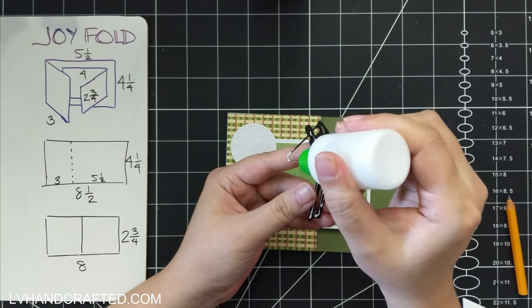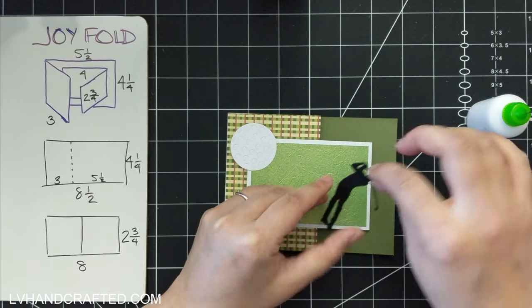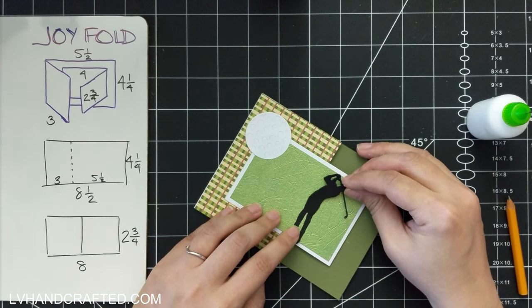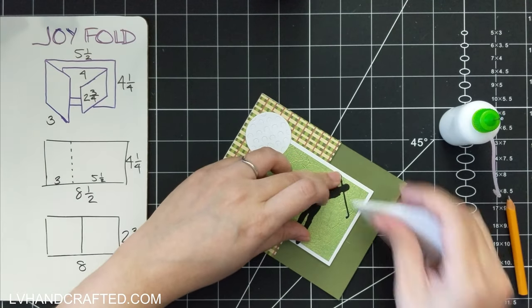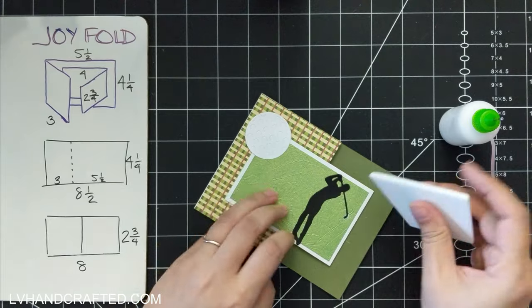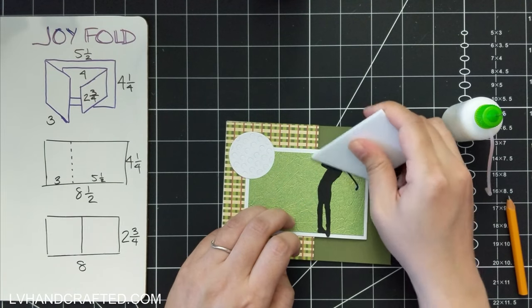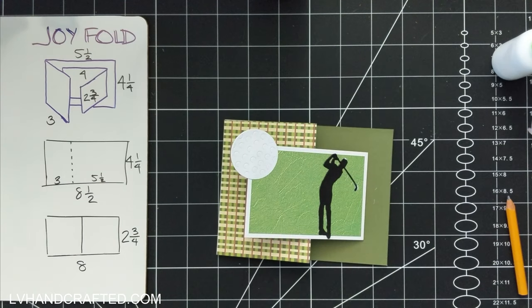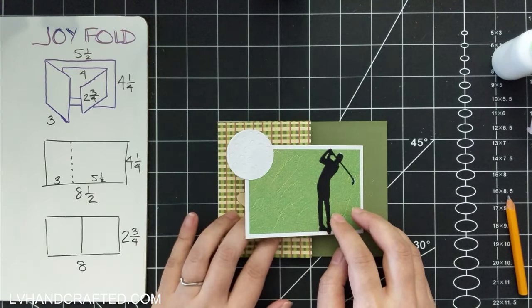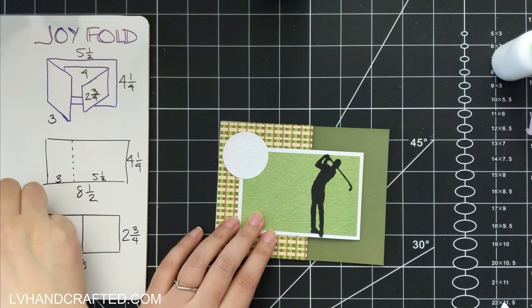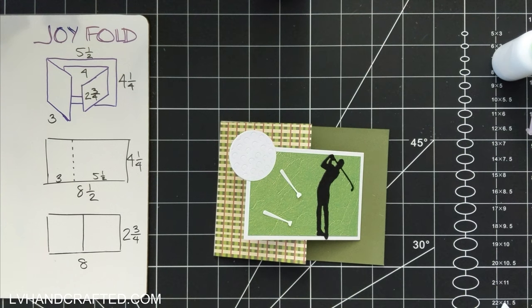And so this silhouette of a golfer, sort of, I don't know if he's, I guess this is at the end of his swing, so after he's taken a swing at the golf ball. And that's the cool thing about this collection is you get a silhouette of a golfer and you also get a silhouette of baseball players as well. So really fun if you have sports fans that you need to create cards for. This is a fantastic collection for that.